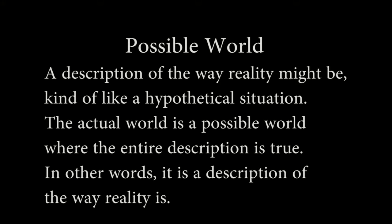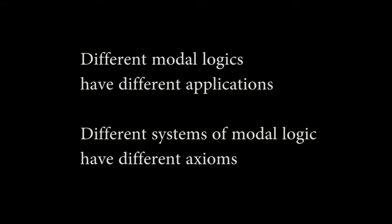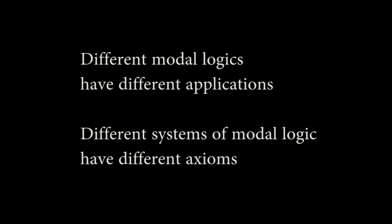There are different systems of modal logic where the axioms are different, and also different modal logics where the application is different. The term 'possible' and the term 'necessary' have different meanings in different modal logics. So the first question is: what modal logic are we using for the ontological argument, and which of the systems should we use? Modal logics include deontic logic, the logic of obligation; temporal logic, the logic of time; epistemic logic, the logic of knowing things; and alethic logic, the logic of truth. Since the argument is an ontological or metaphysical argument, we are going to use alethic logic and deal with metaphysical modalities.